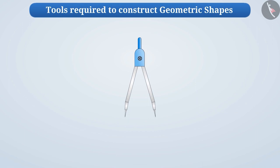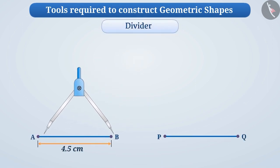Now look at this tool. It is like a compass but it has two pointed ends. We call it a divider. It is a pair of pointers used to compare lengths.